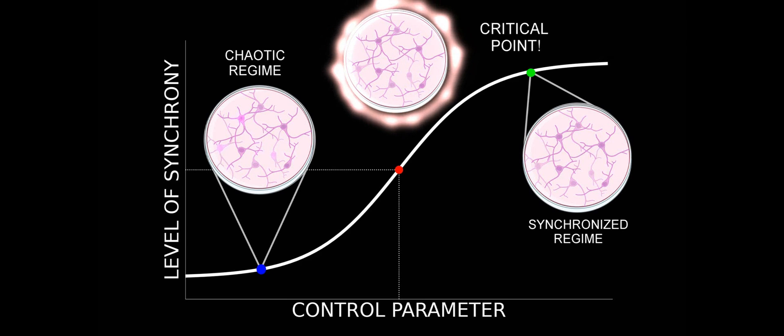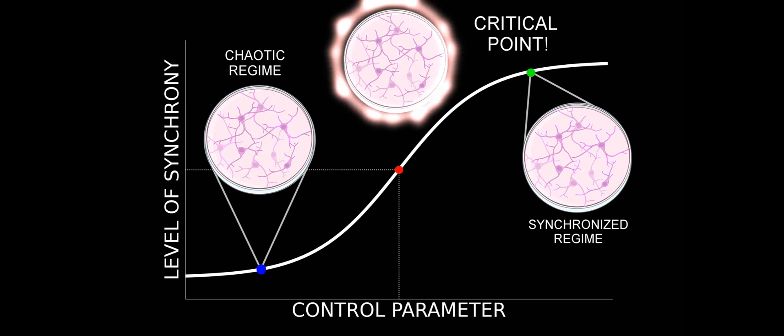A widely discussed conjecture establishes that the brain could extract significant advantages from operating close to a critical point, a perfect balance between the completely synchronous and the completely chaotic regime, and in between of sorts.